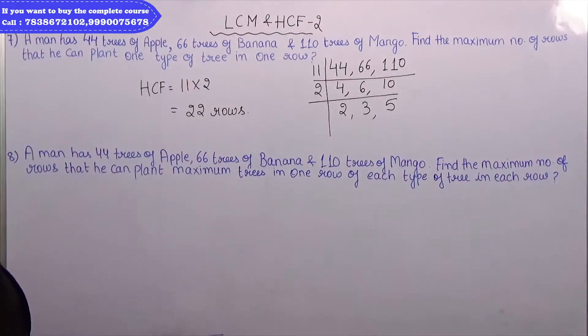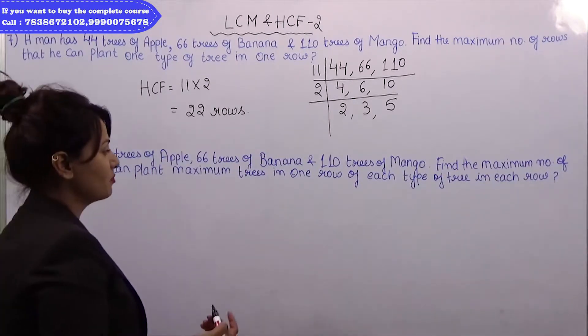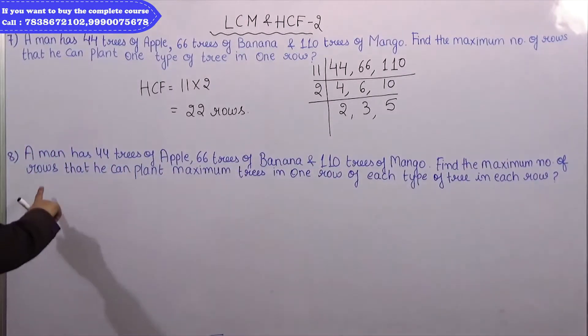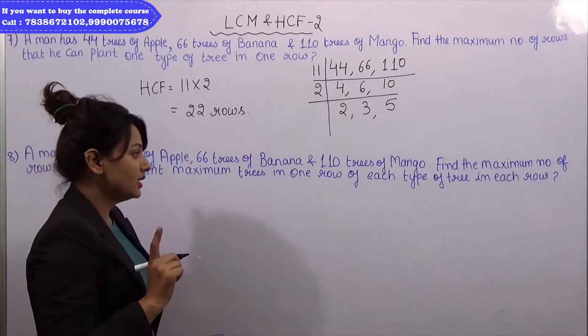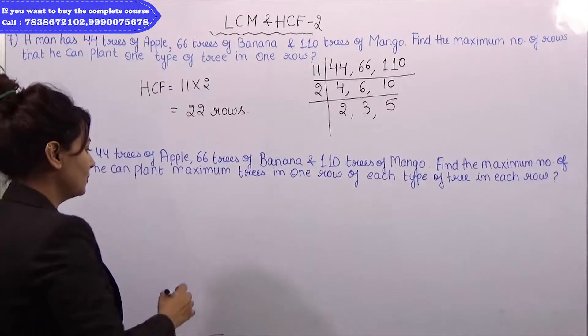Question number 8. A man has the same question: 44 trees of apple, 66 trees of banana, and 110 trees of mango. Find the maximum number of rows that he can plant maximum trees in one row of each type of tree in each row.